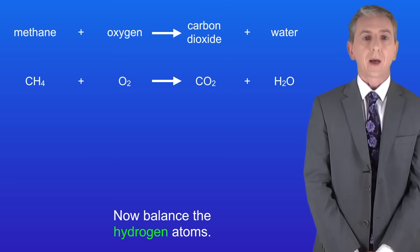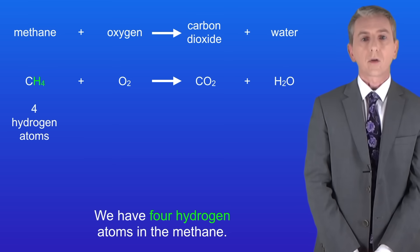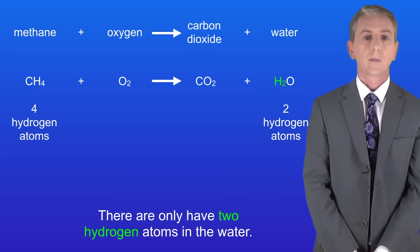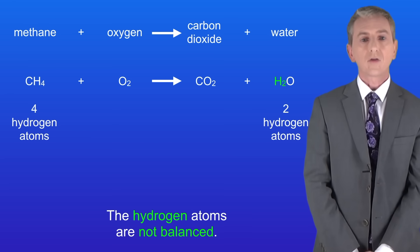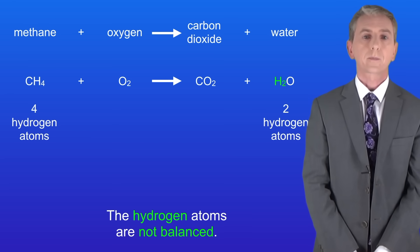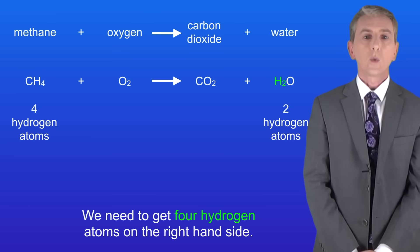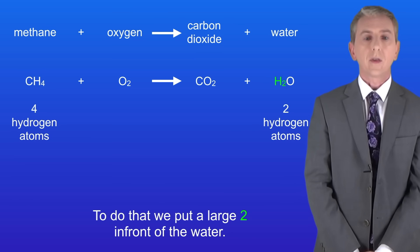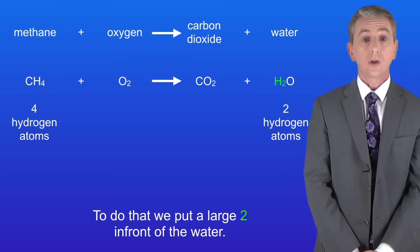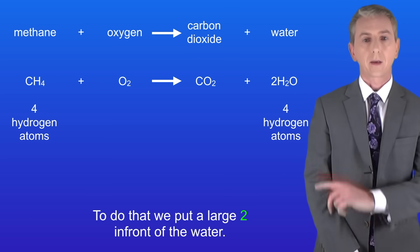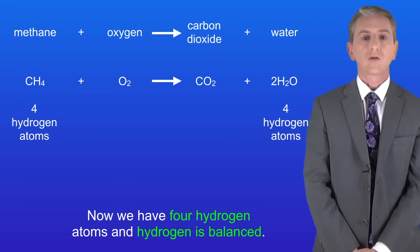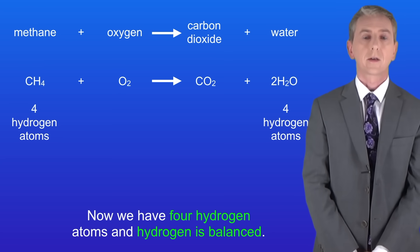Now we need to balance the hydrogen atoms. We've got four hydrogen atoms in the methane but there are only two hydrogen atoms in the water, so the hydrogen atoms are not balanced. We need to get four hydrogen atoms on the right hand side and to do that we put a large two in front of the water. Now we have four hydrogen atoms and the hydrogen is balanced.